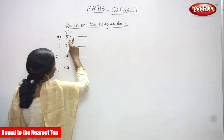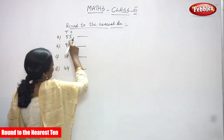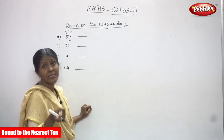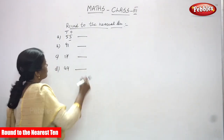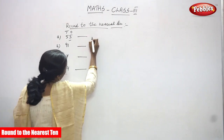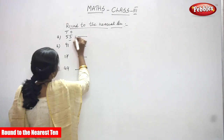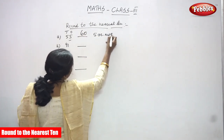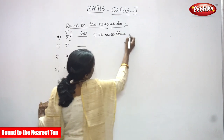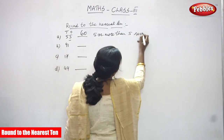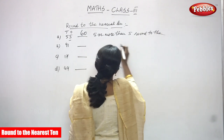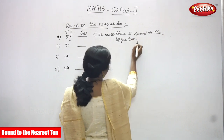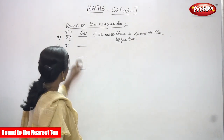55 comes under the second rule. 5 or more than 5 — round to the nearest bigger 10. That is 60. So the answer is 60.